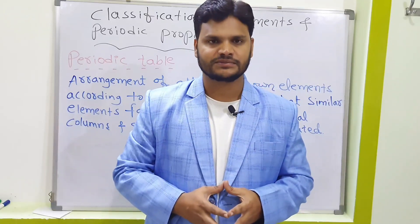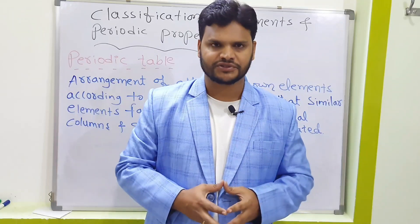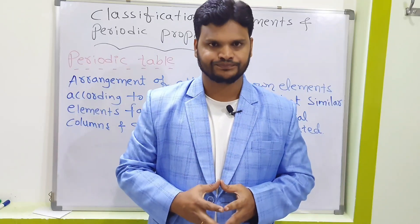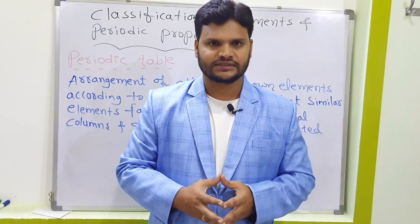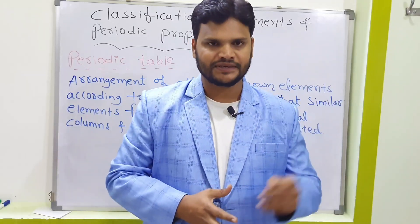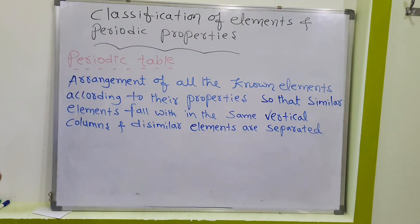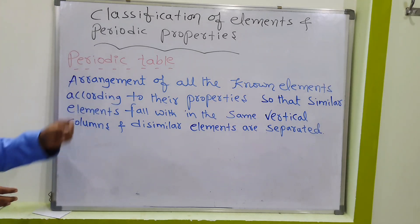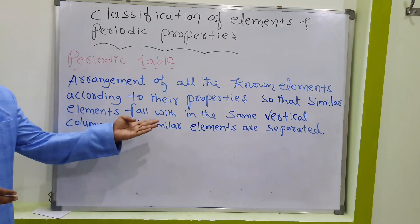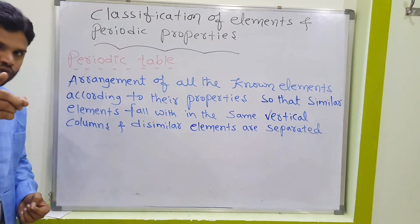If you understand this concept thoroughly, you will be able to understand all inorganic chemistry as well as total chemistry. First, in this video, I am going to discuss the history of the periodic table and basic terms and definitions. What is a periodic table? It is the arrangement of all known elements according to their properties so that similar elements fall within the same vertical columns.